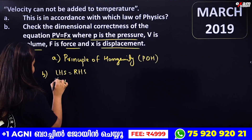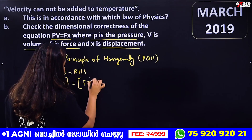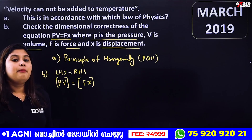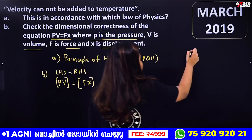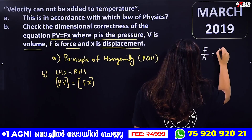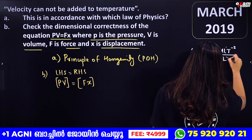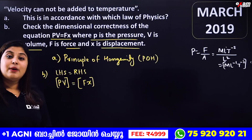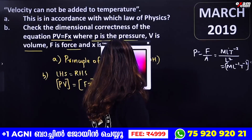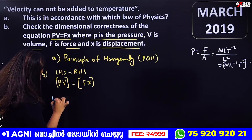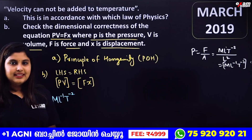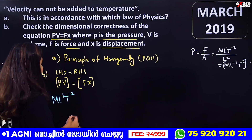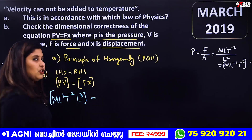Now, left-hand side is PV. The dimension of pressure is ML⁻¹T⁻². We substitute that. Volume V has the dimension L³. So the dimension of PV on the left-hand side is ML⁻¹T⁻² multiplied by L³, which gives us ML²T⁻². That completes the left-hand side dimension.